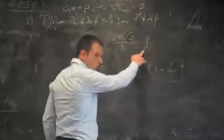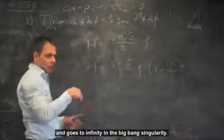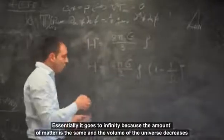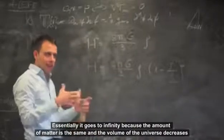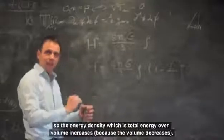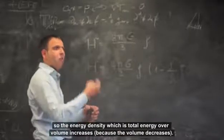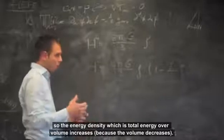The energy density grows and goes to infinity in the Big Bang singularity. Essentially, it goes to infinity because the amount of matter is the same and the volume of the universe decreases. So the energy density, which is total energy over volume, increases because the volume decreases.